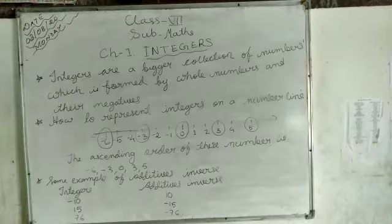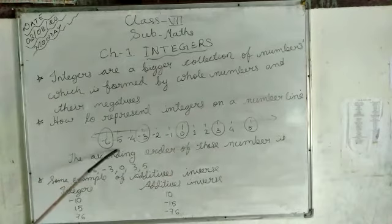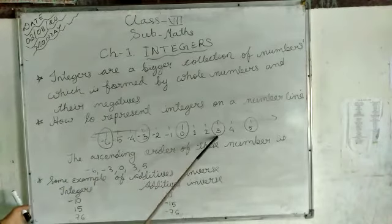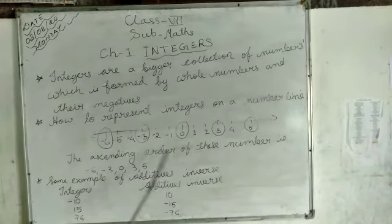The second point is how to represent integers on a number line. I have represented one number line here and also I have marked some numbers. This is minus 6, minus 3, 0, 3, and 5 I have marked. If I will ask you to write the ascending order of this marked number, then how you will write the ascending order of this?